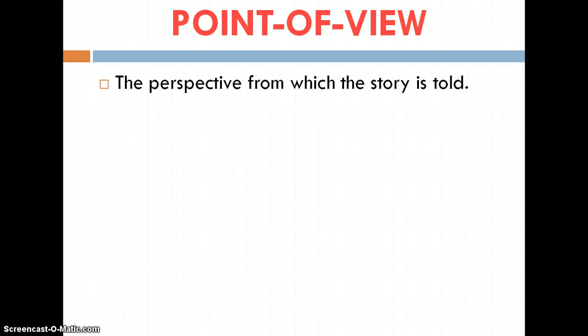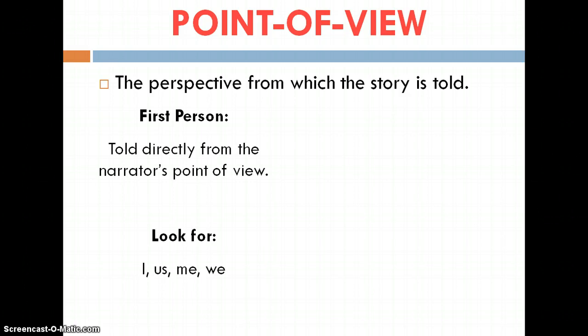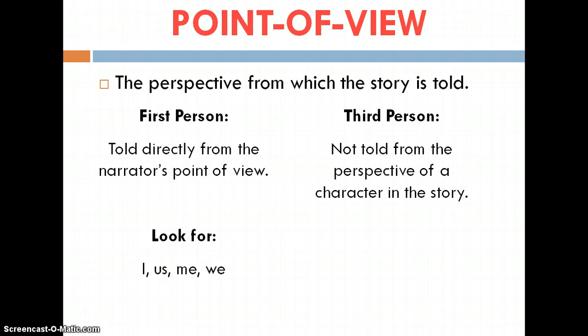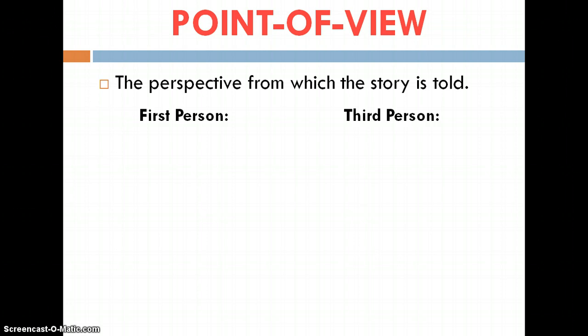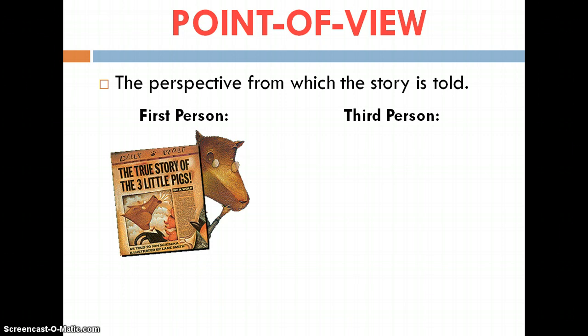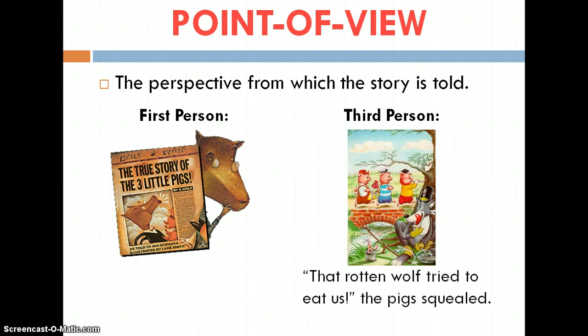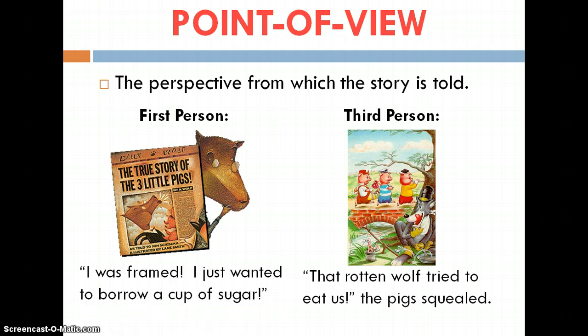Point of view is the perspective from which the story is told. First person is told directly from the narrator's point of view — look for words like I, us, me, we — as if the narrator is in the story talking to you. Third person is not told from the perspective of a character in the story; it uses he, them, or a neutral voice. For example, in a first-person version, the wolf might say, 'I was framed. I just wanted to borrow a cup of sugar.' In third person, the narrator would say the pig did this, the wolf did this.